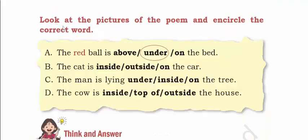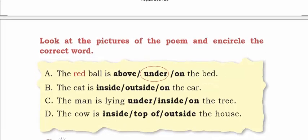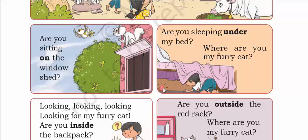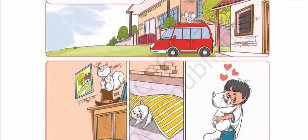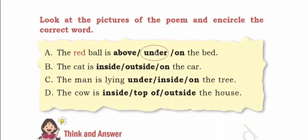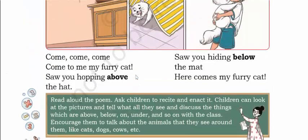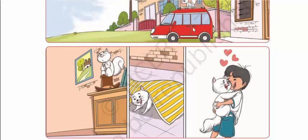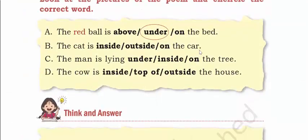Now let's do this exercise: look at the pictures of the poem and encircle the correct word. The red ball is under the bed — in the picture we can see the red ball is under the bed, so that is already done. The cat is dash the car — we saw in the picture that the cat is on the car, on top. So the answer is: the cat is on the car.